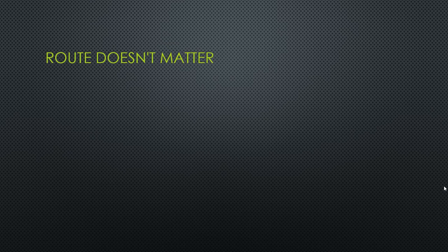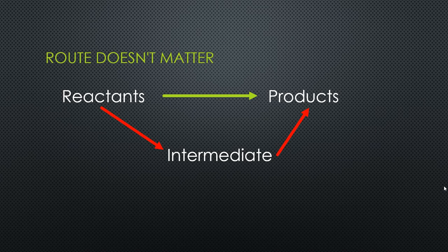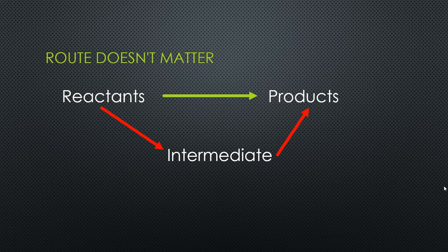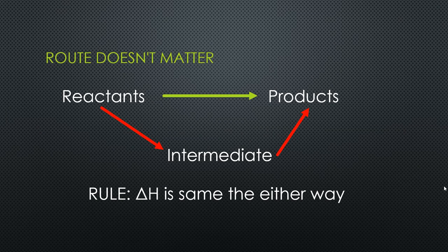Regardless of what way you look at it, you can always calculate the same change in enthalpy. You could look at a reaction as going reactants straight to products, and the enthalpy change for that is actually going to be exactly the same as if you went from the reactants to some intermediate step or steps, and then those intermediates turned into your final products.